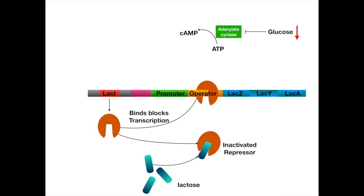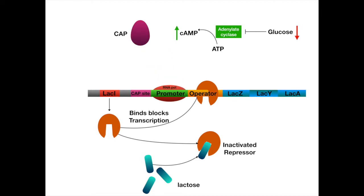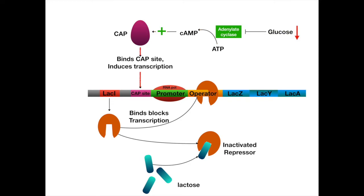So when glucose levels are low, cyclic AMP levels will be high. There is yet another region in this band of DNA called the CAP site. The CAP site with the CAP protein bound will promote RNA binding to the promoter. CAP protein will only bind when cyclic AMP levels are high. So low concentrations of glucose raise cyclic AMP through adenylate cyclase, which activates CAP binding, which activates RNA polymerase binding.